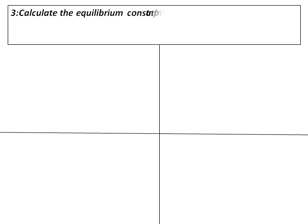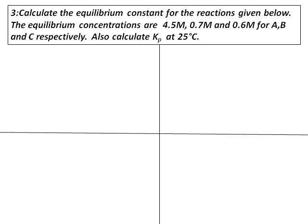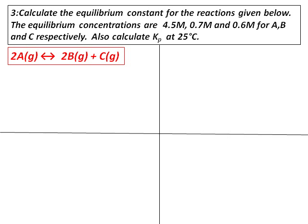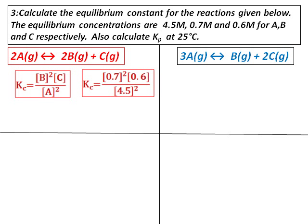Question number 3: Calculate the equilibrium constant for the reaction given below. The equilibrium concentrations are 4.5 molar, 0.7 molar, and 0.6 molar for A, B, and C respectively. Also calculate Kp at 25 degrees Celsius. Two equations are given — one in red and one in blue. Focusing on the left-hand side: 2A giving you 2B plus C. Kc equals concentration of B squared times concentration of C, divided by concentration of A squared. Substituting the values, I get Kc equals 1.5 times 10 to the power of negative 2.